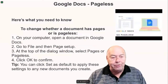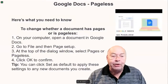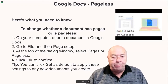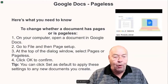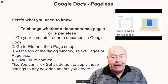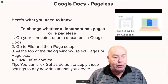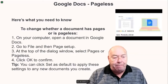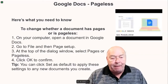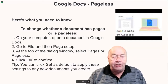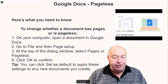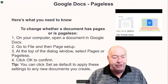Here's what you need to know to change whether a document has pages or is pageless. On your computer, open a document in Google Docs. Go to File and then Page Setup. At the top of the dialog window, select Pages or Pageless. Click OK to confirm that change.